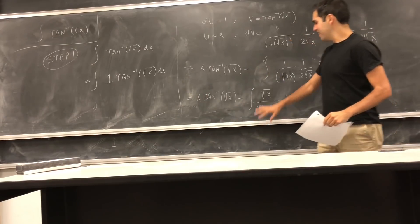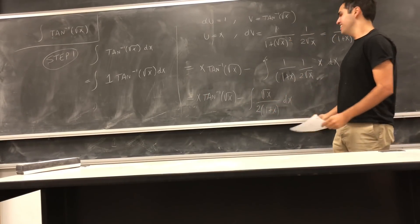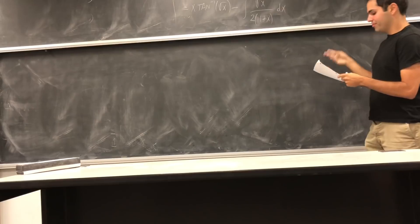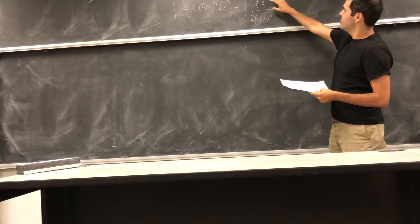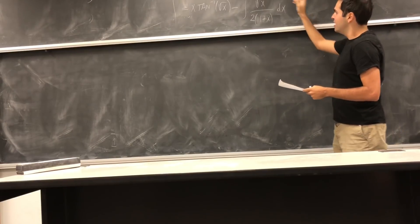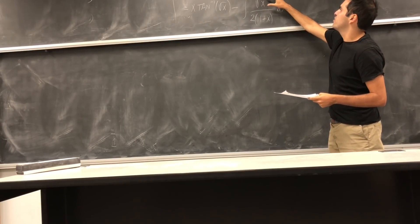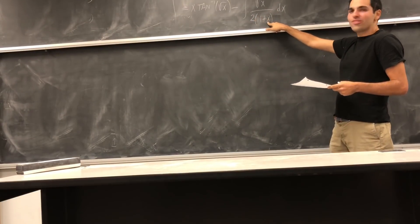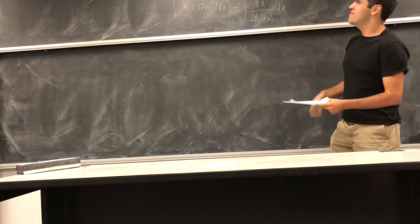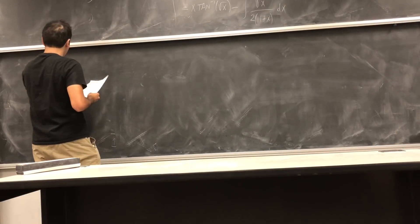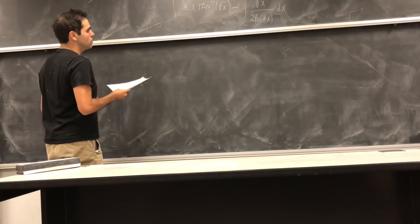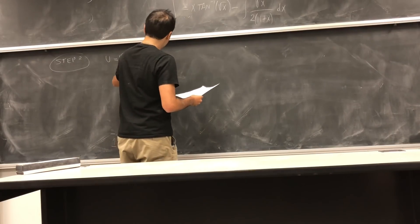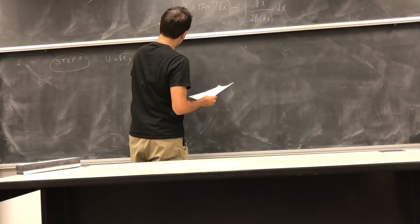This first part is taken care of, but this integral we have no idea how to evaluate. It turns out a substitution is pretty useful here, because the derivative of square root of x is 1 over 2 square root of x, and the denominator involves square root of x squared. So step two: let's use a u-substitution. Let u equal square root of x, and therefore du is 1 over 2 square root of x dx.